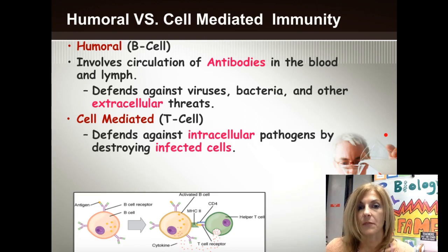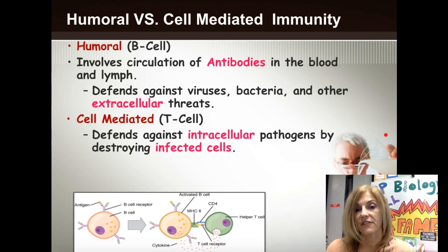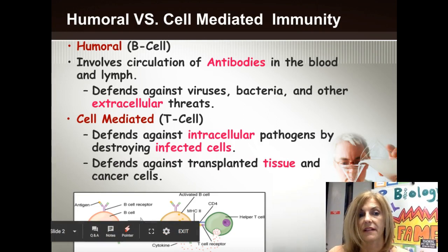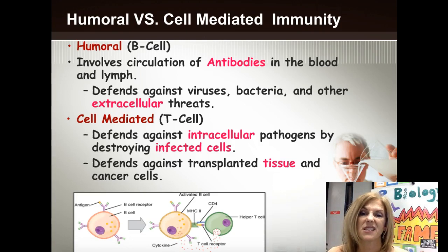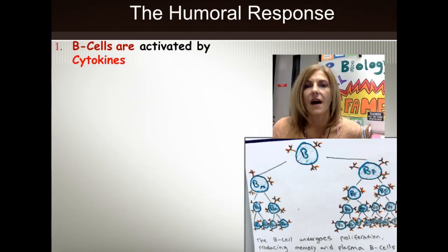The cell-mediated response will destroy the cells themselves that are infected with pathogens. The humoral response works differently: antibodies bind the pathogens, and then a macrophage eats up the pathogen — so they don't destroy them directly. Unfortunately, the cell-mediated response also tries to get rid of transplanted tissues and organs, because it recognizes those cells as not belonging to you. Fortunately, it also takes care of cancer cells, so we may not even know we have cancer.